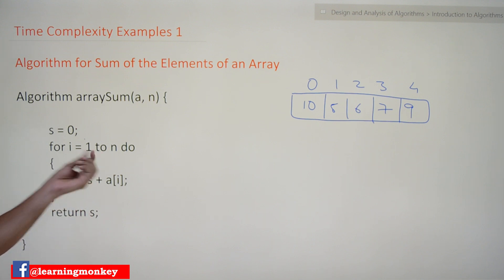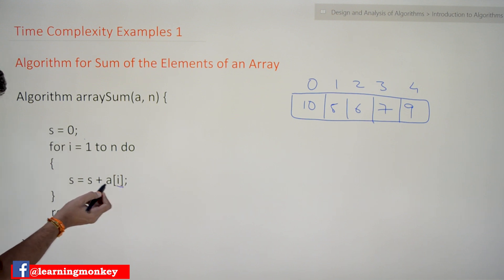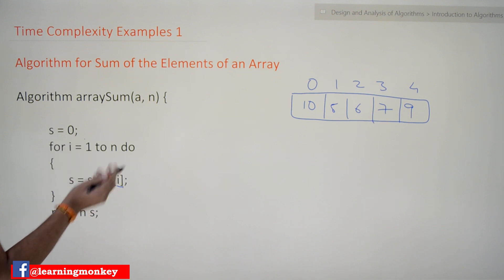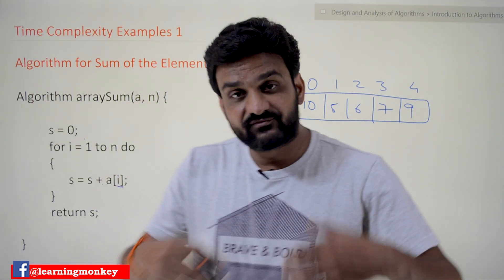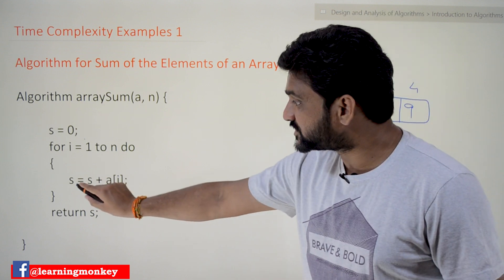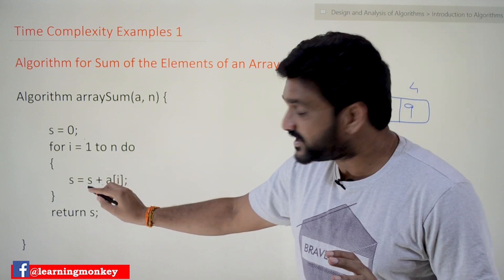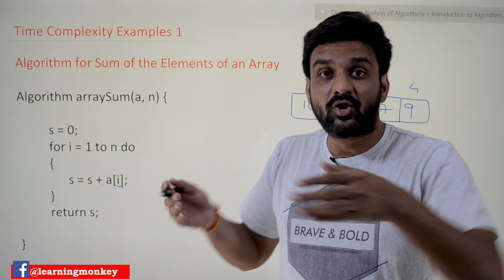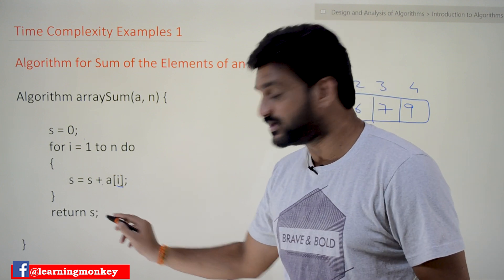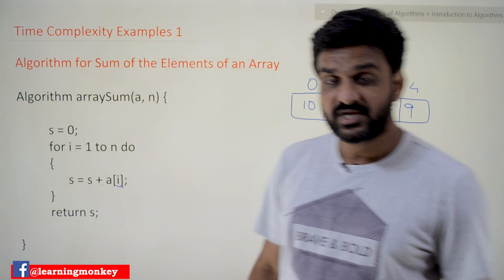In each iteration, the elements of the array are fetched. In the first iteration, a[0] = 10 is fetched and added to s. Initially s is 0, so after the first iteration s = 10. In the second iteration, the second element 5 is fetched and added: 10 + 5 = 15. In this way we add all the elements of the array and the final sum is returned.